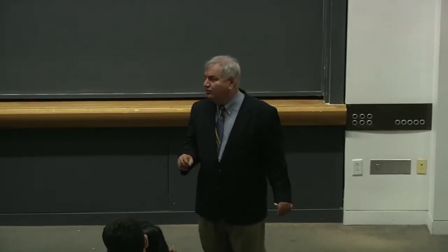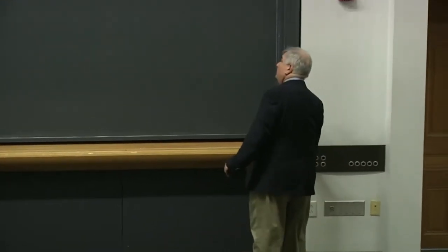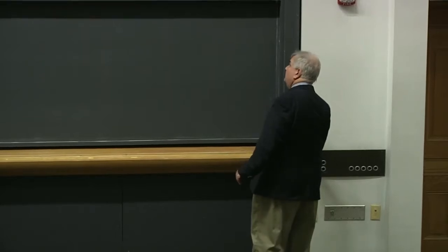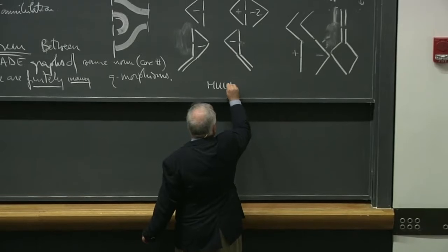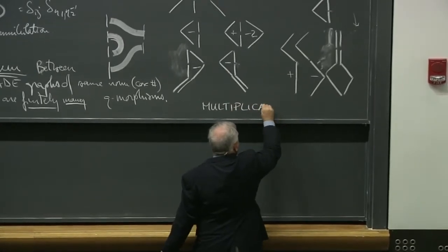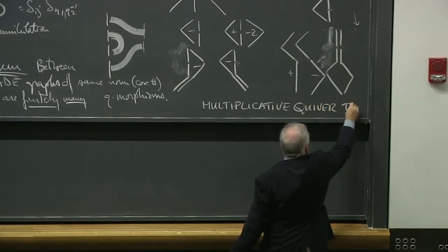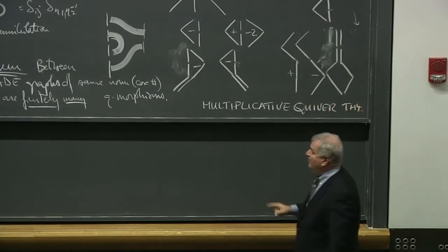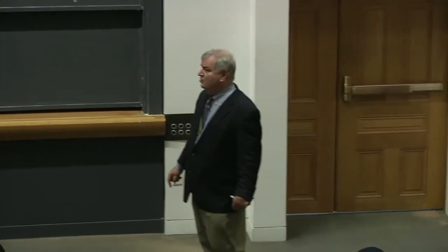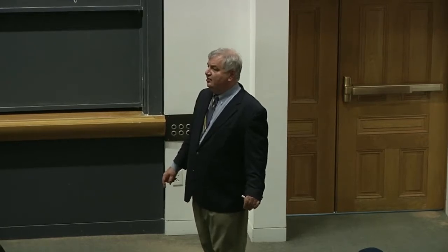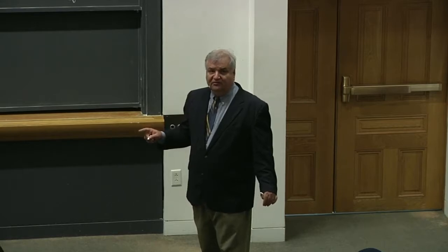This is what I would call multiplicative quiver theory. What we did two days ago was classifying all the maps from A_N into any graph, and since they are reversible, from any graph into A_N.